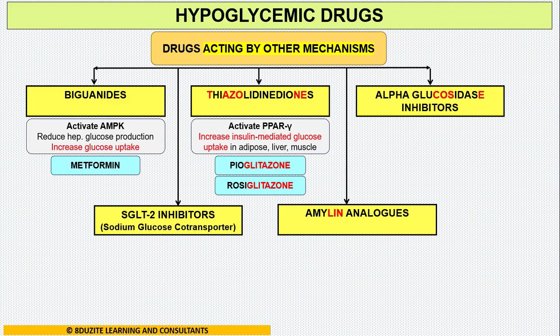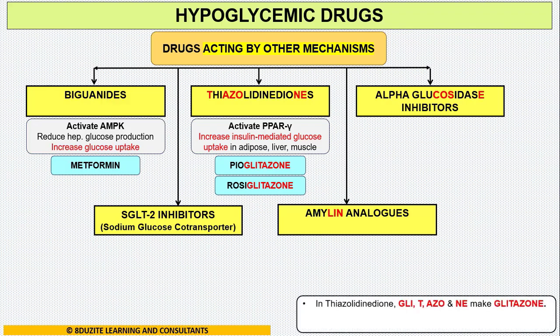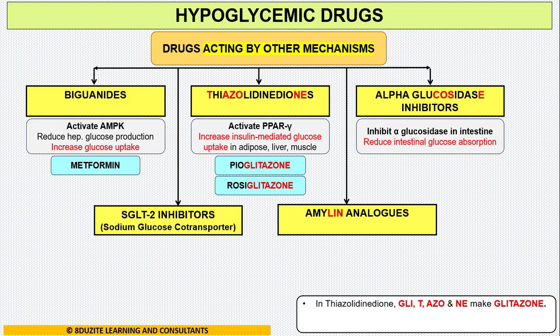The letters G-L-I again appear as an infix in the middle of the words for thiazolidinediones. Moving on to alpha-glucosidase inhibitors — they inhibit the alpha-glucosidase enzyme in the intestine, thereby reducing intestinal glucose absorption. We have three drugs: acarbose, voglibose, and miglitol.